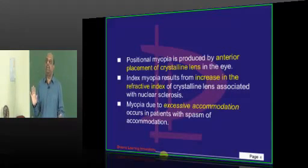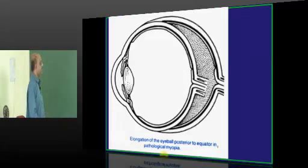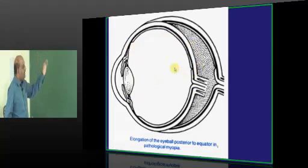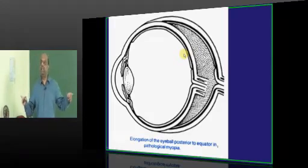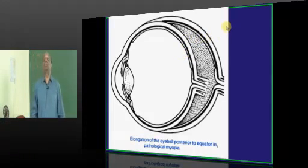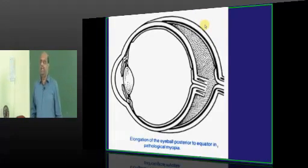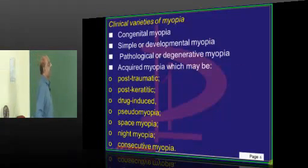Simply remember: increase equals myopia. This is a typical example of an eyeball elongated posteriorly, and hence an increased axial length is responsible for pathological myopia. Any condition that leads to degeneration of the sclera, which can increase the length of the eyeball, can lead to the development of pathological myopia.